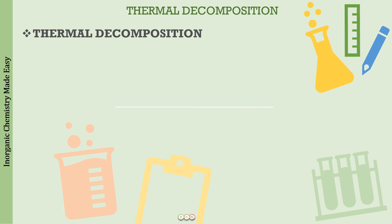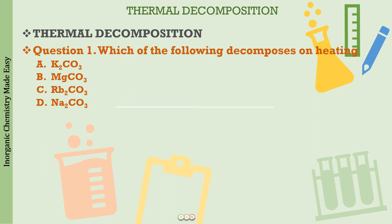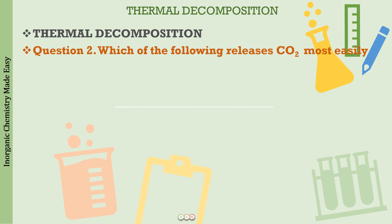Now let us apply this learning to exam questions. Question 1: which of the following decomposes on heating — potassium carbonate, magnesium carbonate, rubidium carbonate, or sodium carbonate? Potassium carbonate, rubidium carbonate, and sodium carbonate are all class 1 metal carbonates — they will not decompose. Only magnesium carbonate (class 2) will decompose on heating to form magnesium oxide and carbon dioxide. The answer is choice B.